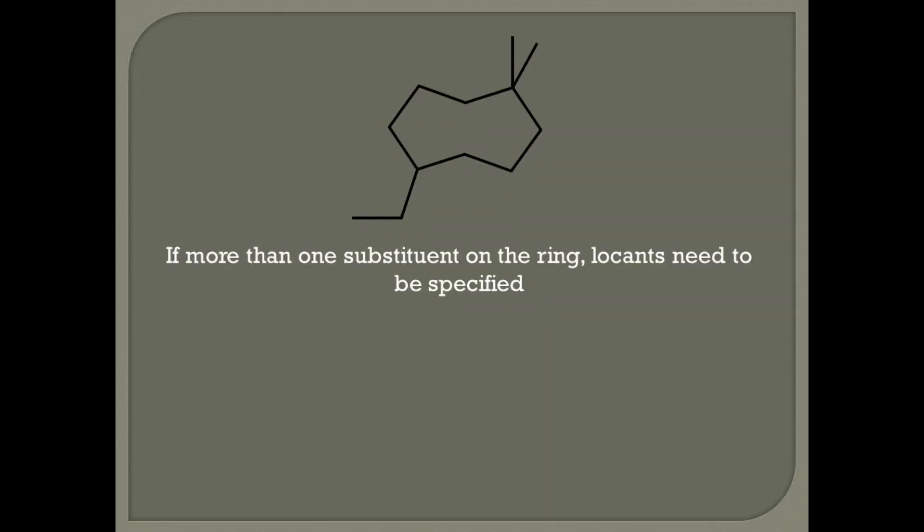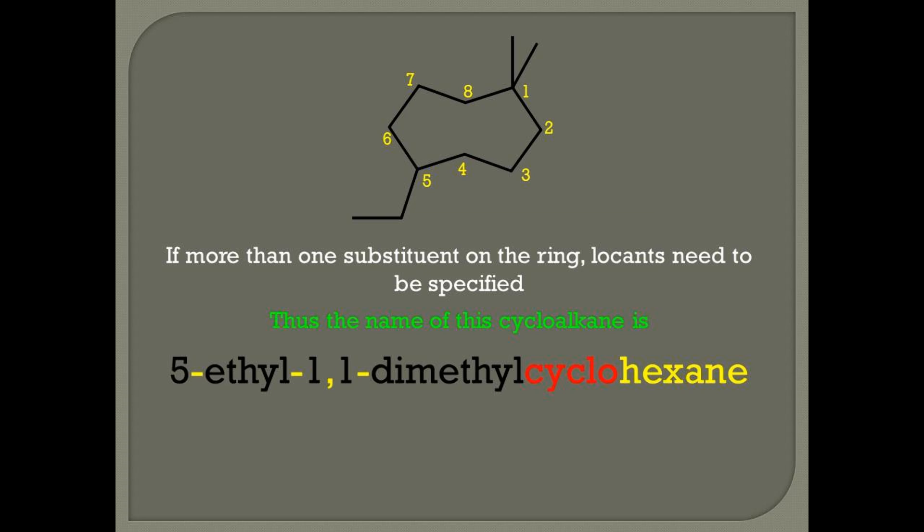Rule 3. If more than one substituent is on the ring, then locants must be specified. Here's a ring with eight carbon atoms and three substituents. All the rules of naming alkanes apply here. Therefore, we must number the ring in a direction that gives the smallest number to the first substituent. There are two ways to do that, so we go to the point of first difference, which is the second substituent. By numbering as indicated, the second and first substituents get the smallest numbers possible. This cycloalkane becomes 5-ethyl-1,1-dimethylcyclohexane. We put ethyl before methyl because, according to the alphabet, E comes before M.